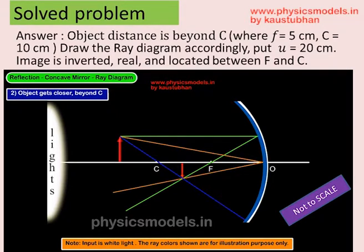So even if we draw the ray diagram roughly, we will get the image position correctly. And we can find that the image is formed between F and C, it's real and diminished. This is a good way to check if our answer is correct.